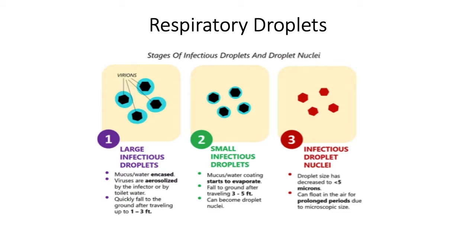Infection spreads through mucous membranes by droplets and aerosols containing the virus, and also through fomites which stay on surfaces and can remain a potential source of infection for a longer duration. Large infectious droplets travel one to three feet, but smaller infectious droplets spread through coughing or sneezing can travel up to three to five feet — that is why it is advisable to stay two meters away from patients whenever possible.